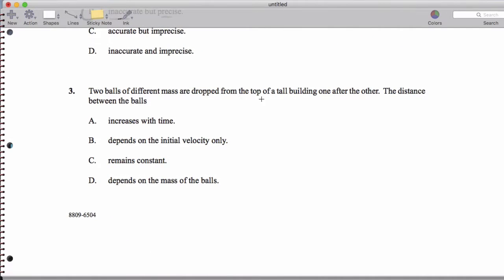And then two balls dropped from the top of a building, one after the other. The distance between the balls actually increases with time, not because of the mass. It actually has to do with the fact that they're accelerating, which means they're gaining speed at the same rate. But one is always faster than the other, and therefore it gains more distance with time.